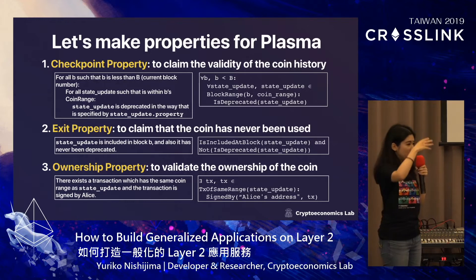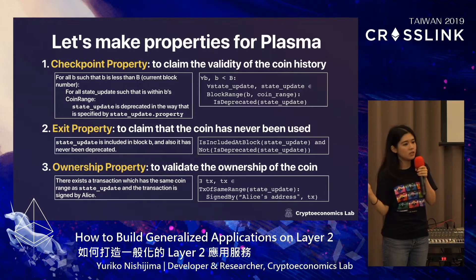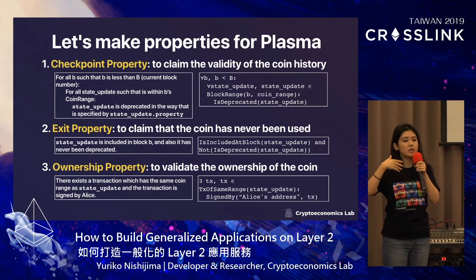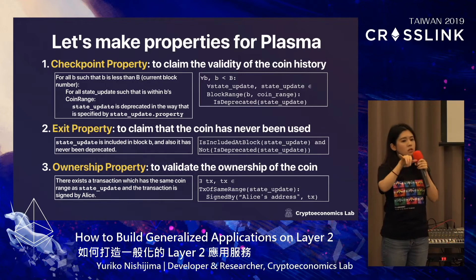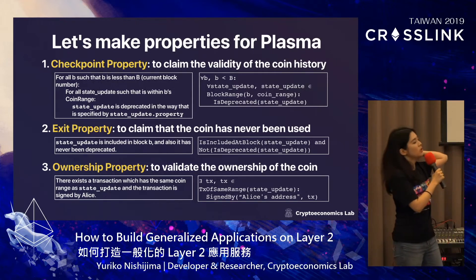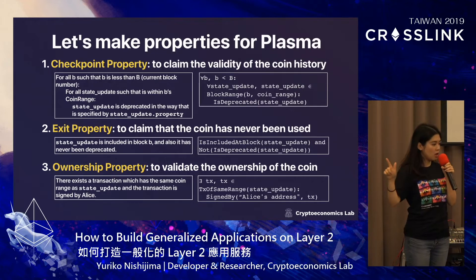Following this basic universal notation, you can make properties for Plasma, which is relatively complex compared to other L2 constructions. First, let me explain how Plasma Cache works. Two users who want to make payments deposit funds to the Plasma chain and send messages on it. The aggregator verifies transactions, collects them, makes a Merkle tree, and publishes the hash root as a summary to the main chain. Users can then withdraw funds from Plasma to the main chain. To enable this, you need three properties: checkpoint property, exit property, and ownership property.